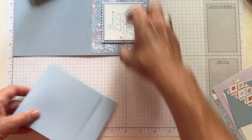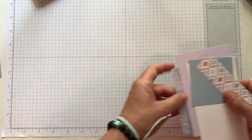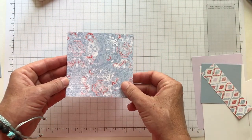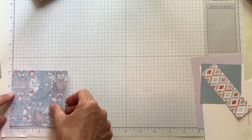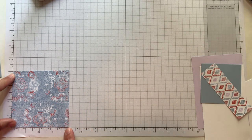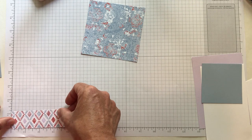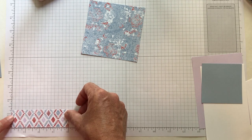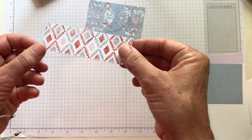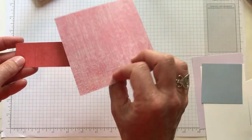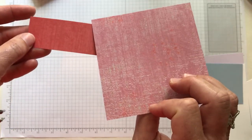Then we have a piece of our woven threads designer series paper, beautiful soft subtle patterns on that paper. This DSP measures four inches by four inches. And then we've got that other little strip of another pattern of woven threads DSP that measures one and a quarter by four inches. I'll show you, there's the front and then there's the back. So they both have that kind of washed look.